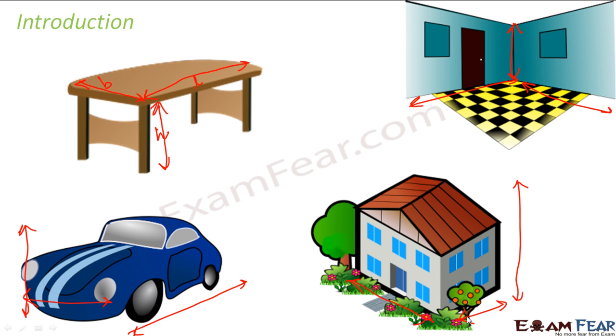In all of these objects, whether it's a house or a car or a table or a room, everywhere we needed three different parameters to completely describe their size. So all of these objects are examples of three-dimensional objects because we need three dimensions to completely describe them.